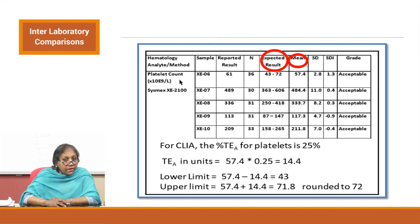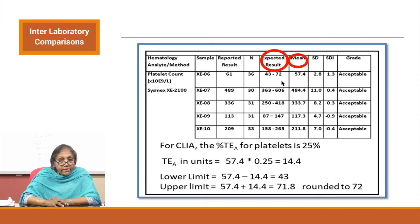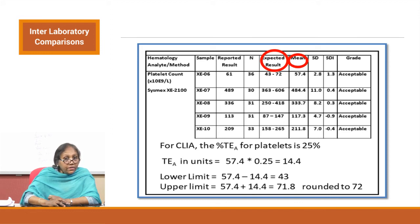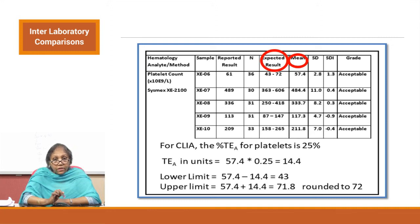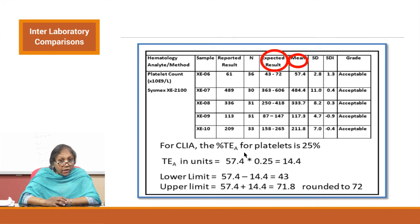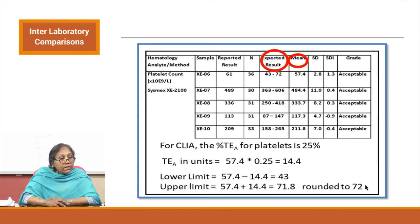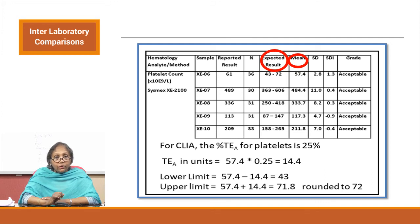For example, in this report the expected result is 43 to 72 when the mean is 57.4. The SD is only 2.8, which does not explain those limits — the EQAS provider is using the CLIA percentage total allowable error for platelets, which is 25%. So 57.4 minus 25% is approximately 43, and plus 25% is 71.8, rounded to 72. The provider is using the total allowable error range of CLIA. It is up to the laboratory to understand how these limits are set.